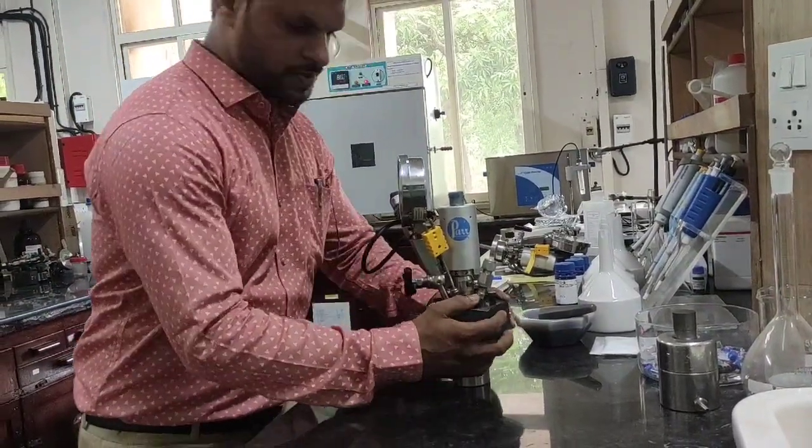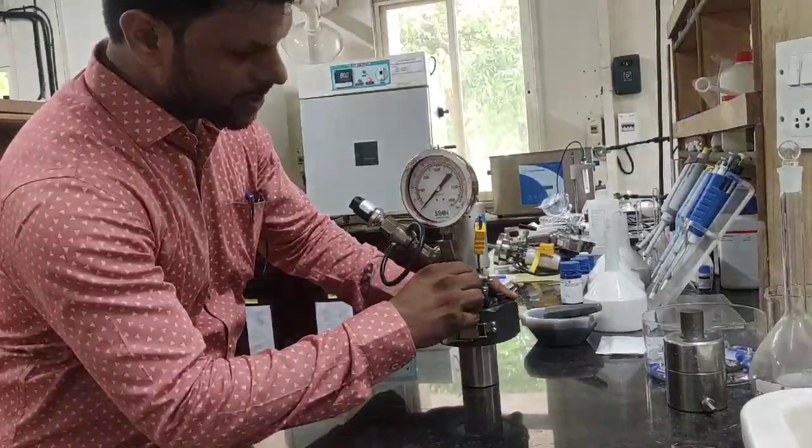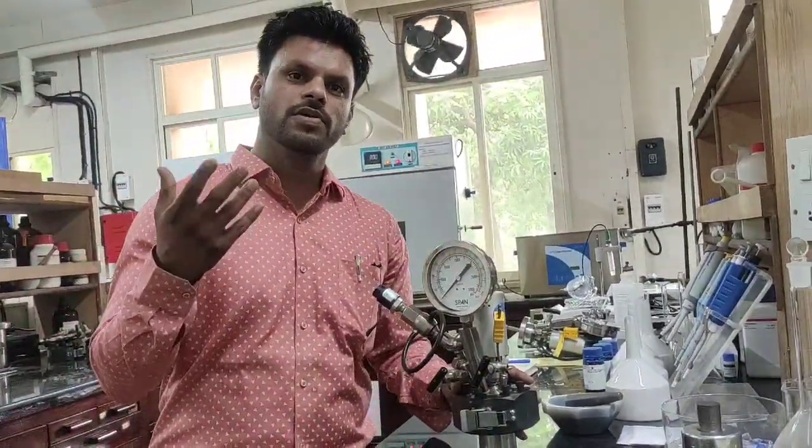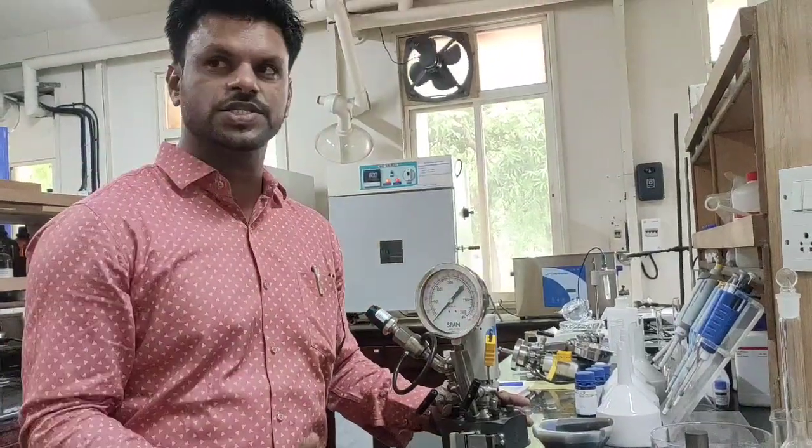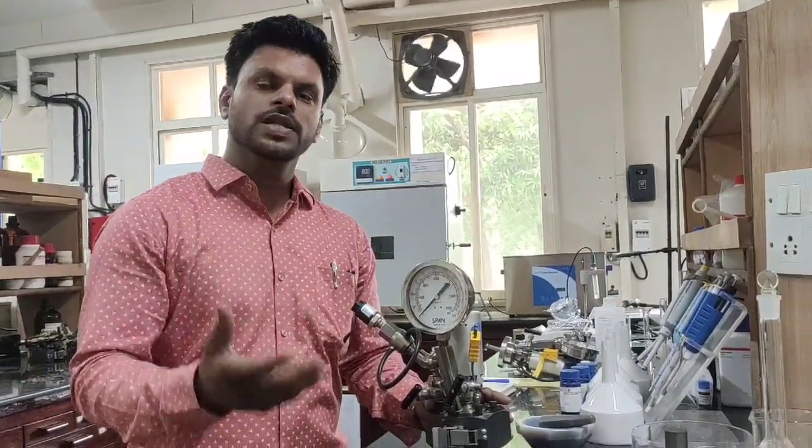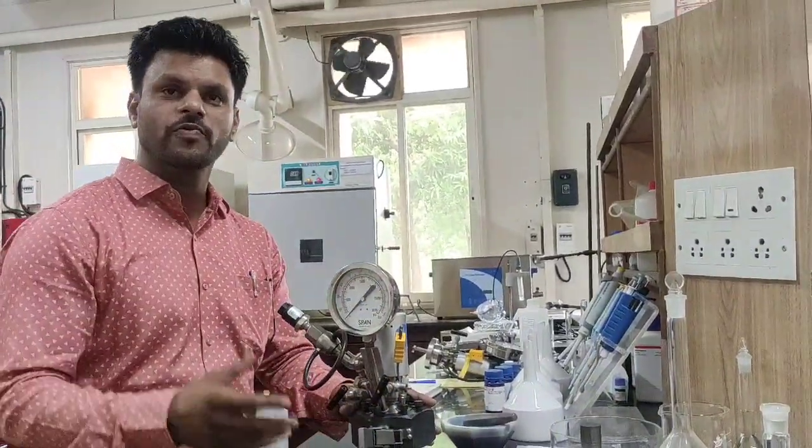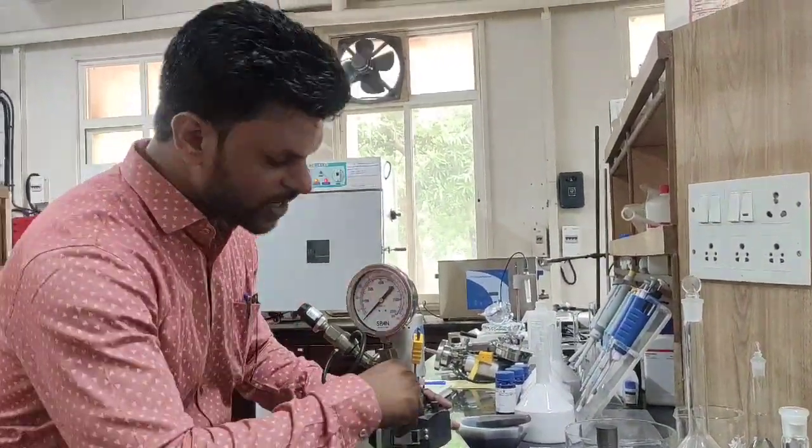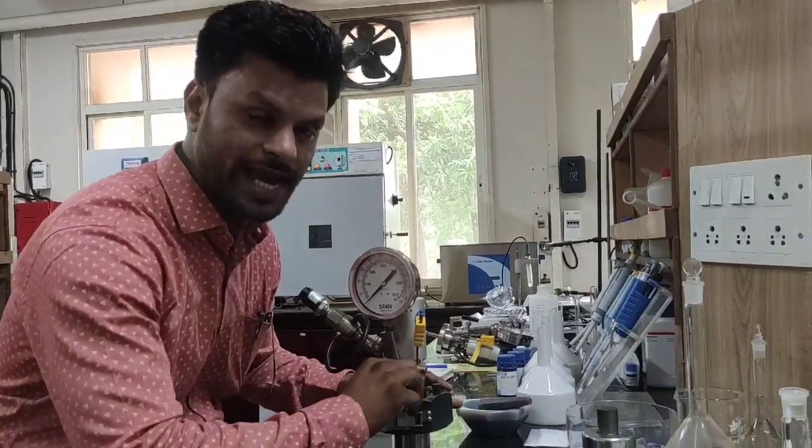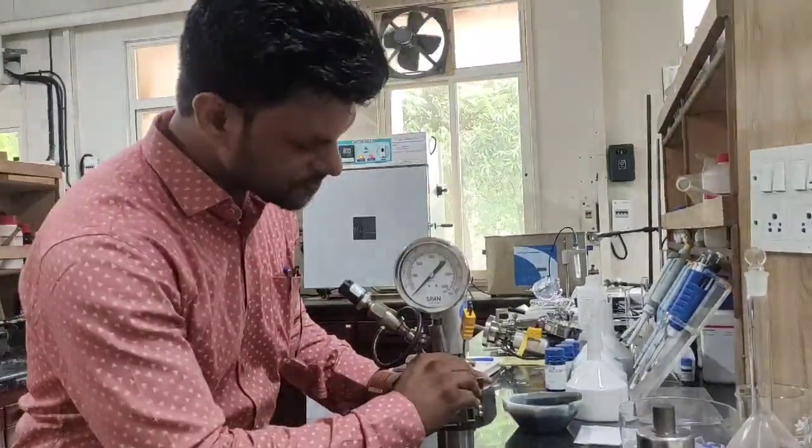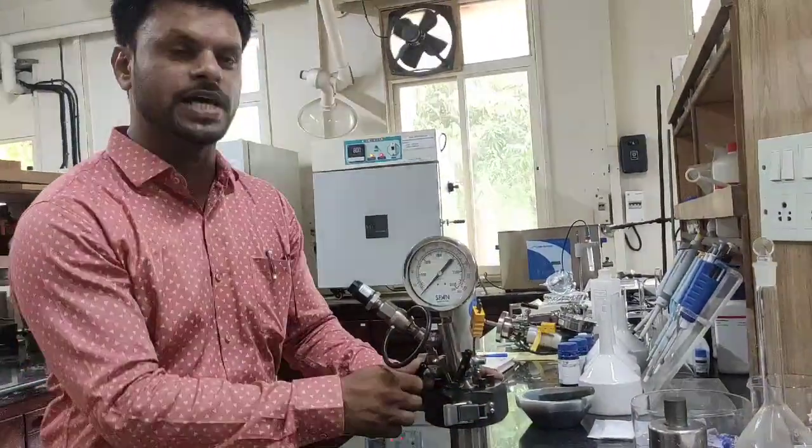And these knobs are given, one is for inlet and one is for outlet. Say for example if you are carrying out hydrogenation reactions, so you need to give hydrogen gas here. With the help of a cylinder, we can fill hydrogen gas to your desired pressure like 5, 10, 20 bar pressure and you need to close that.